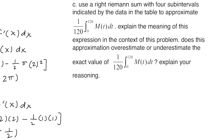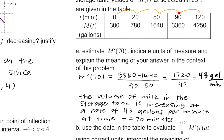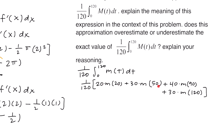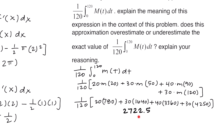Part c asks us to use a right Riemann sum with four subintervals to approximate one over 120 times the integral from 0 to 120 of m of t dt. The four subintervals from the table are 0 to 20, 20 to 50, 50 to 90, and 90 to 120, with widths of 20, 30, 40, and 30 respectively. Using right endpoints, we use m of 20, m of 50, m of 90, and m of 120. The values from the table are 780, 1,640, 3,360, and 4,250. Plugging this into the calculator gives us 2,722.5.